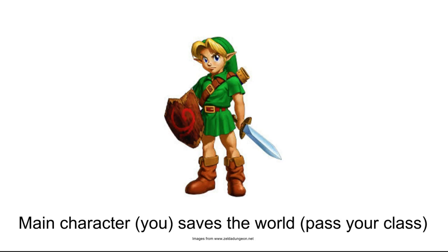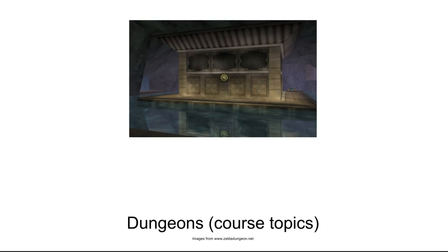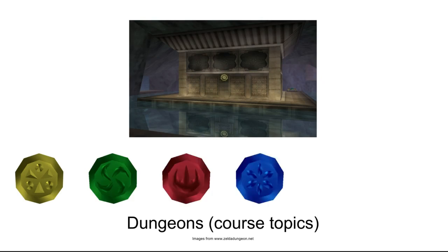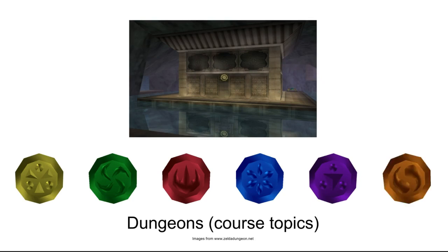As you are going and saving the world, you're going to have to go through some dungeons — those are your course topics that you have to master to get through the game properly. When you beat the dungeon, you're going to get a nice medallion, which is probably some kind of grade or reward that counts towards your performance in the course. Get enough medallions and you've done all the course content, and you can move on, fight that final boss, and finish up the course.